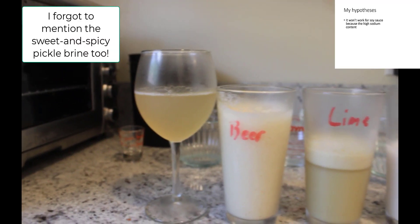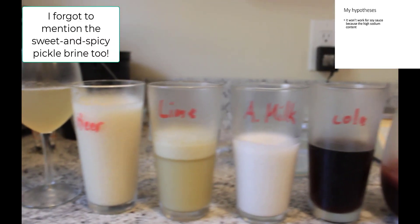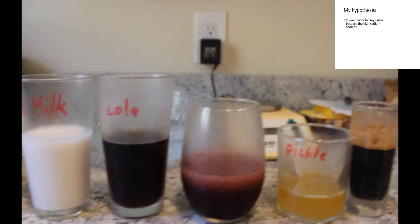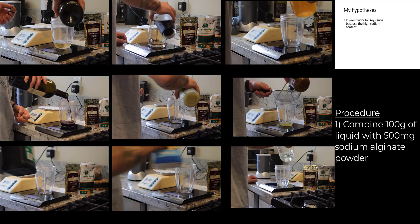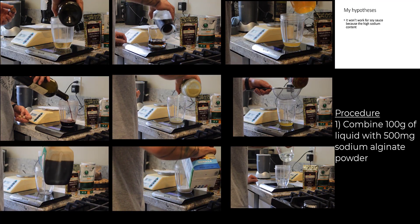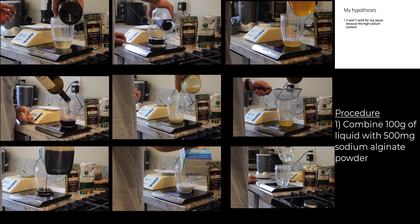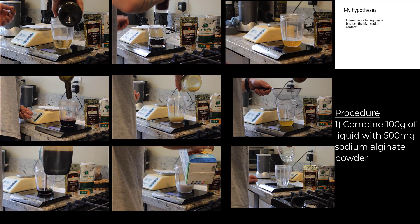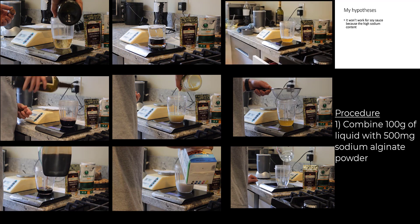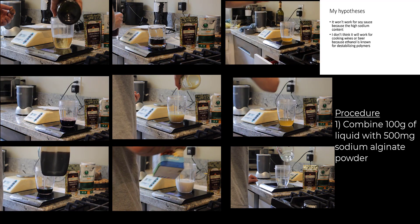So here are my hypotheses. I don't think this is going to work for soy sauce because there's such a high sodium content. Remember, the calcium needs to displace the sodium in order to pull the two alginate chains together. If our solution is really saturated with sodium, this might disrupt that interaction.